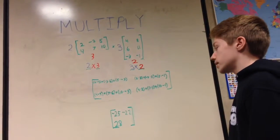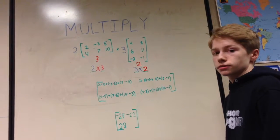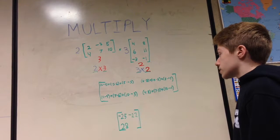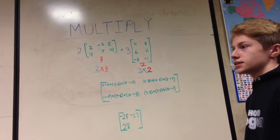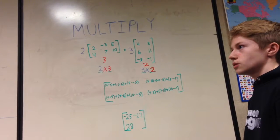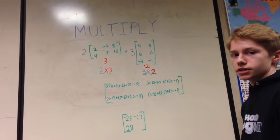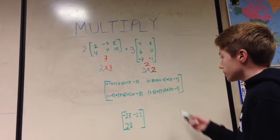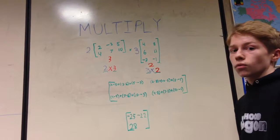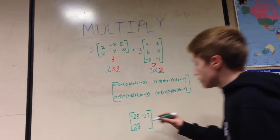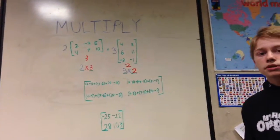For the final corner: four times eight is thirty-two, then seven times eleven is seventy-seven — thirty-two plus seventy-seven is one hundred and nine... and then ten times negative one is negative ten, so you're going to have one hundred and three for the final corner. And that is how you multiply matrices.